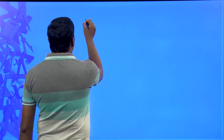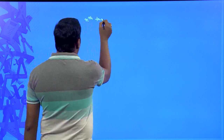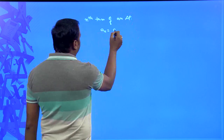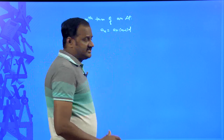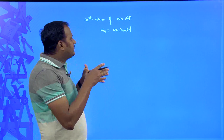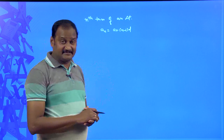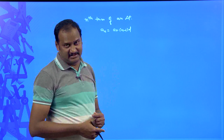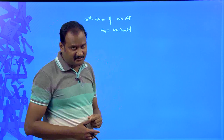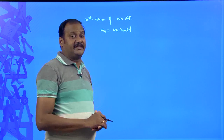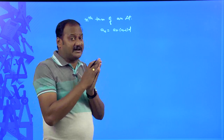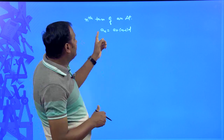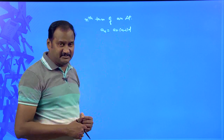The nth term of an arithmetic progression is: a_n = a + (n-1)·d. If you understand this clearly, we can create very interesting problems. Sometimes we can easily figure out whether a given nth term is actually the nth term of an arithmetic progression or not, because every nth term may not be the nth term of an arithmetic progression. For that, you need to understand the definition: a_n = a + (n-1)·d.